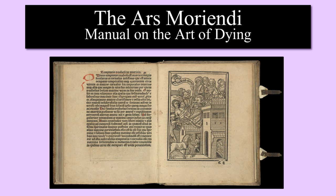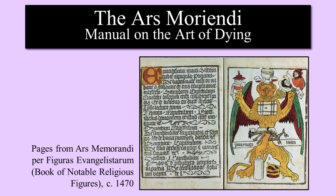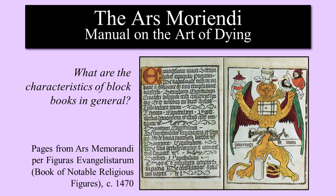In this book, the Ars Memorandii Per Figures Evangelisterium, you see the hand-painted washes of color used to enliven a woodcut's symbolic imagery. Most block books contain 30 to 50 leaves. Some 15th century block prints actually used tinsel and tiny quartz crystals to bring a tactile quality or to illuminate the image.